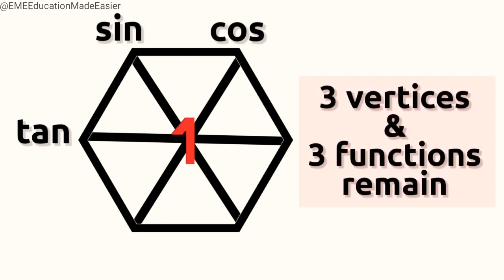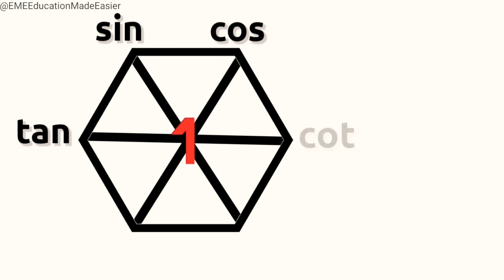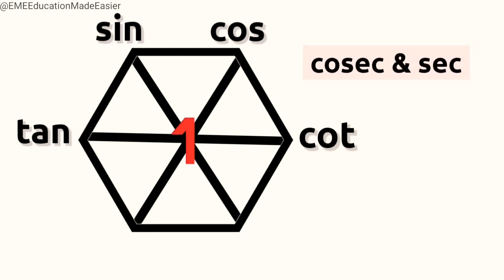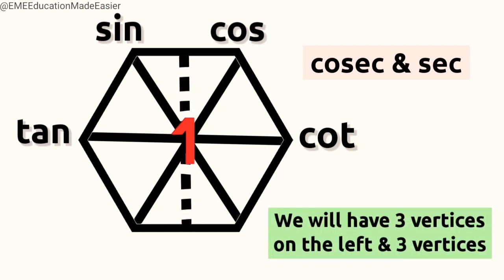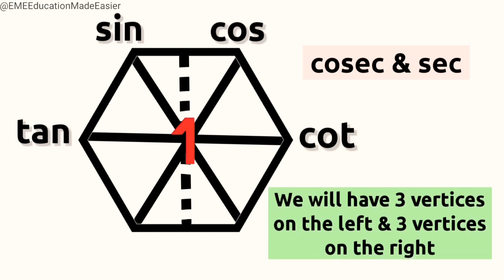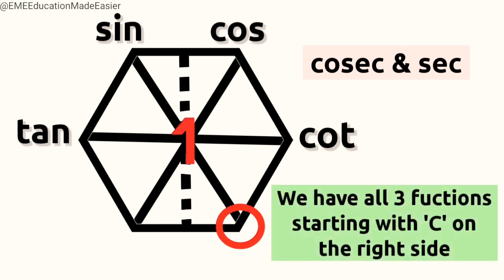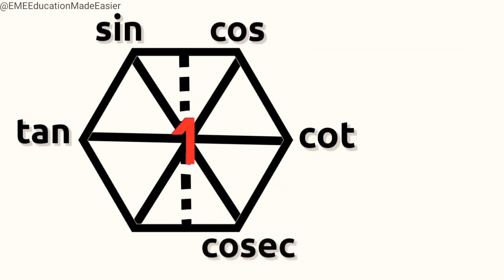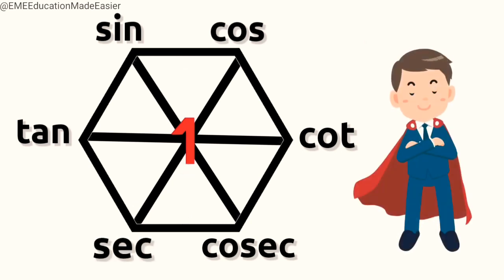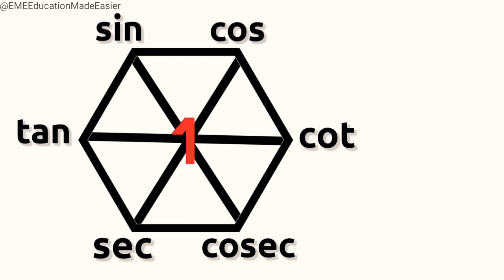Now three vertices and three functions remain. We write cot opposite to tan. What remains is cosec and sec. If we draw a vertical line through the center of the hexagon, we will have three vertices on the left and three on the right. To remember what's written on the right vertex, just remember that we have all three functions starting with 'c' on the right side. So we write cosec here, and what remains is sec, which we write on the left side.